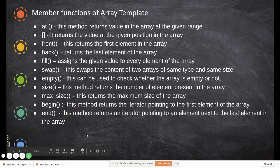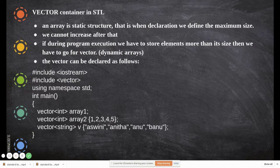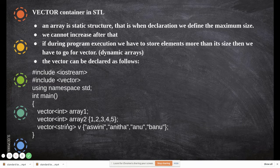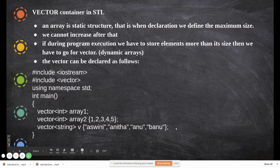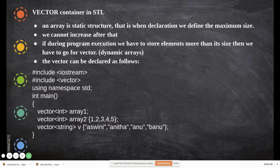In a vector you can declare like this without specifying any number of elements — only the data type is declared. Here you have declared array two which consists of five elements, but at execution time you can keep on increasing the number of elements; it will not be limited to five. So this vector will grow. The main difference is: array is static — when declaring you specify the number of elements and cannot add more than that.